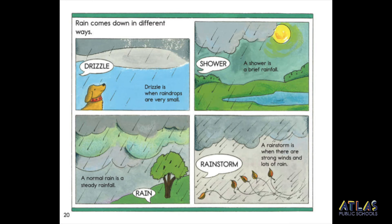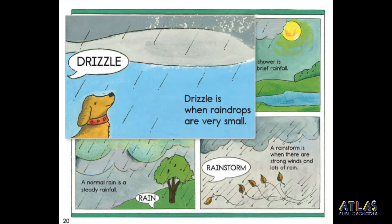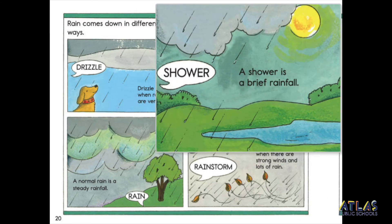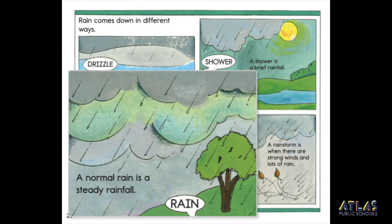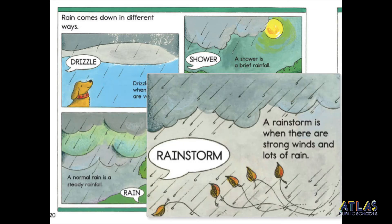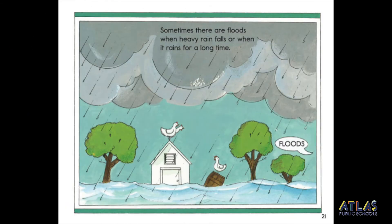Rain comes down in different ways. Drizzle is when rain drops are very small. A shower is a brief rainfall. A normal rain is a steady rainfall. A rainstorm is when there are strong winds and lots of rain. Sometimes there are floods when heavy rain falls or when it rains for a long time.